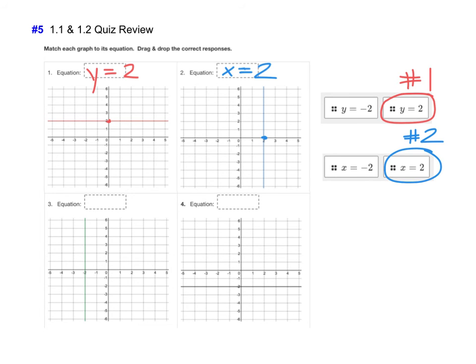Then if we move down to graph number 3, it's another vertical line. So it's going to be x equal, but this time it crosses the x-axis at negative 2. So it will be x equal negative 2.